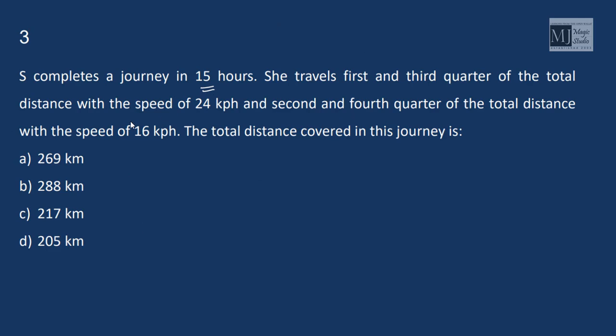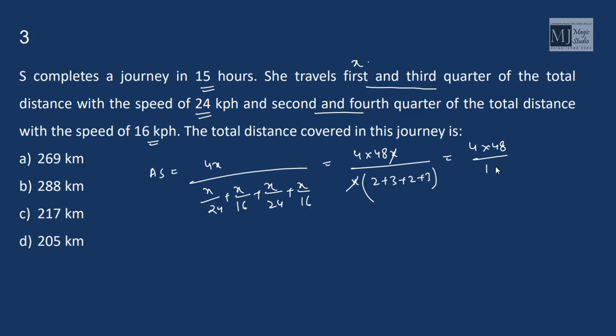S completes a journey in 15 hours. She travels first and third quarter of the total distance with the speed of 24 kph and second and fourth quarter of the total distance with the speed of 16 kph. Let the size or the distance of each quarter be X. Then average speed is total distance 4x by x by 24 plus x by 16 plus x by 24 plus x by 16.